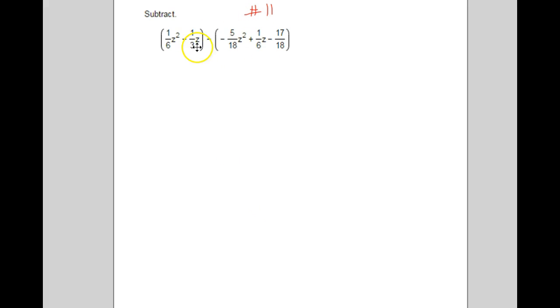Alright, here's a problem from your homework, problem number 11. We're supposed to subtract these two polynomial expressions, so we've got a z squared here and a z here, and over here we also have a z squared and a z, but we also have this constant term.